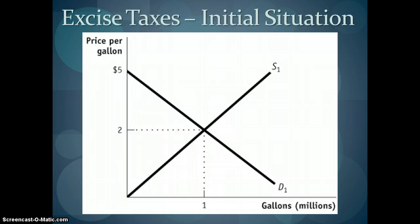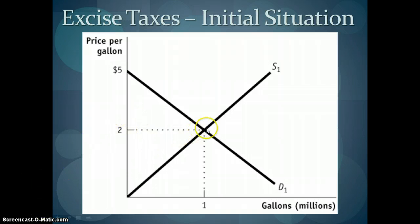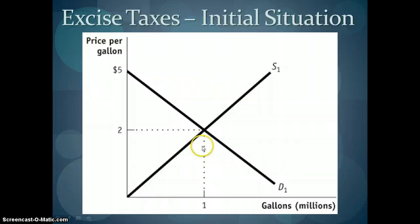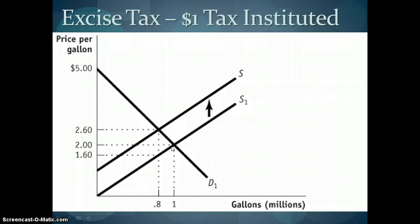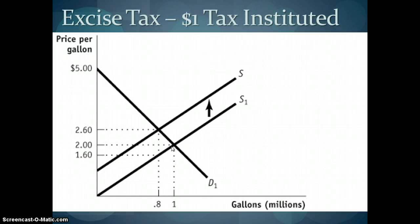We can visualize an excise tax by drawing out a regular supply and demand model where equilibrium price and quantity are designated by the intersection of supply and demand. In this case, it would be $2 per gallon of gasoline, and we would be selling 1 million gallons of gas. We could then imagine a situation in which the government instituted a $1 per gallon tax, levied on suppliers. The supply curve would then shift up, or to the left.